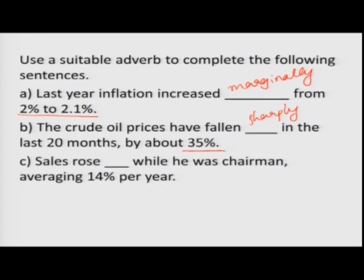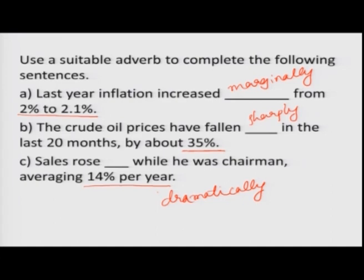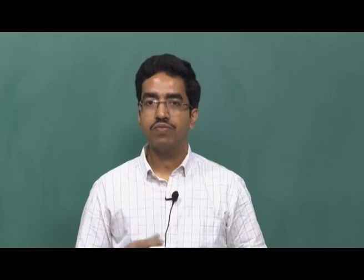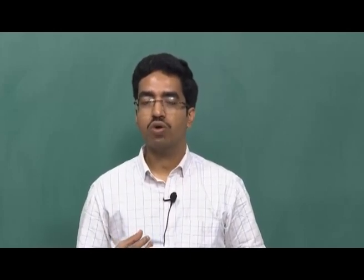Number 3: 'Sales rose blank while he was chairman, averaging 14 percent per year.' A 14 percent per year rise is very significant, so we can say 'Sales rose dramatically while he was chairman, averaging 14 percent per year.' When you supply a modifier, it refines your sentence and makes your writing more attractive, helping you convey your thoughts in a better way.